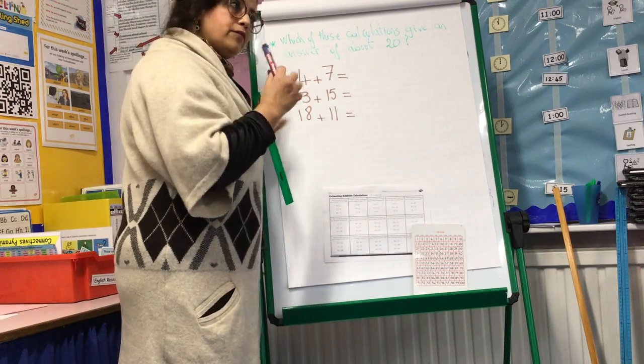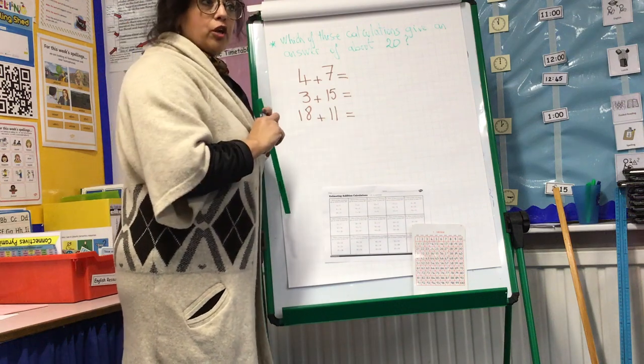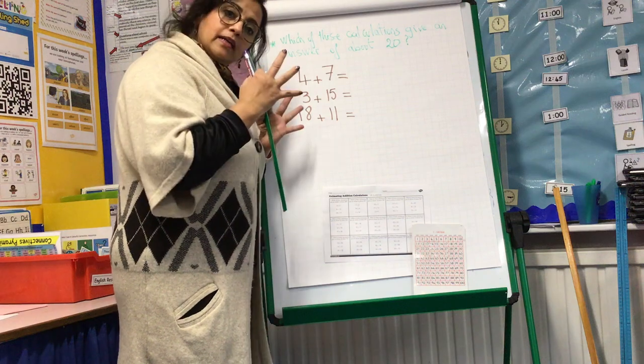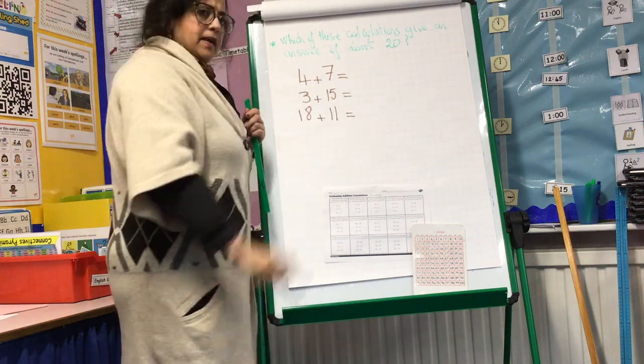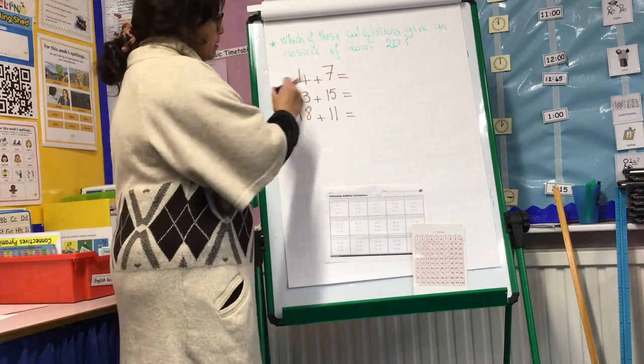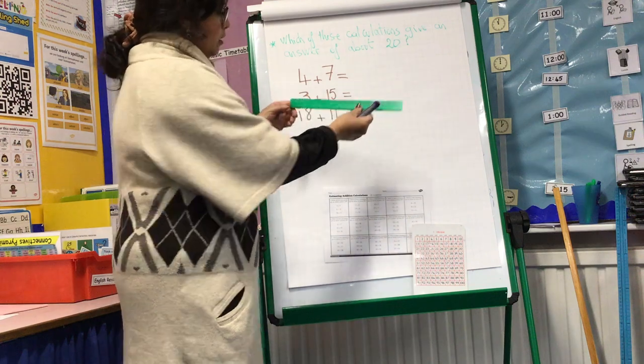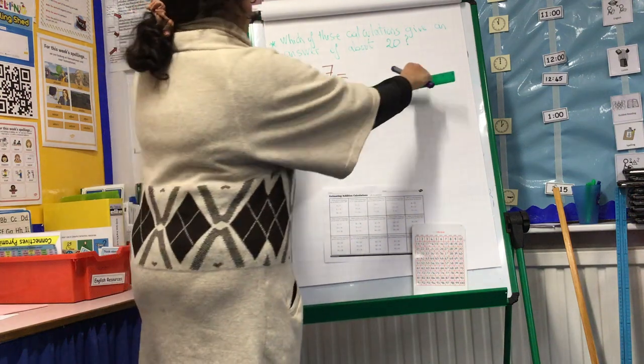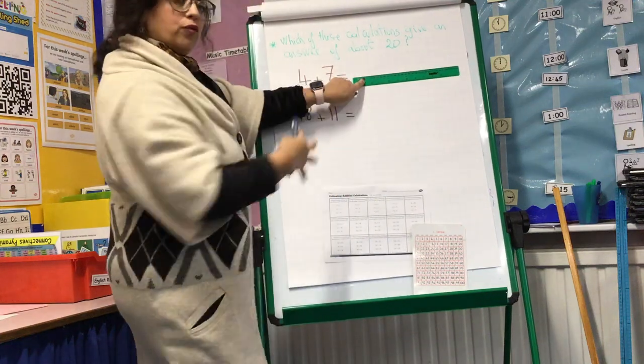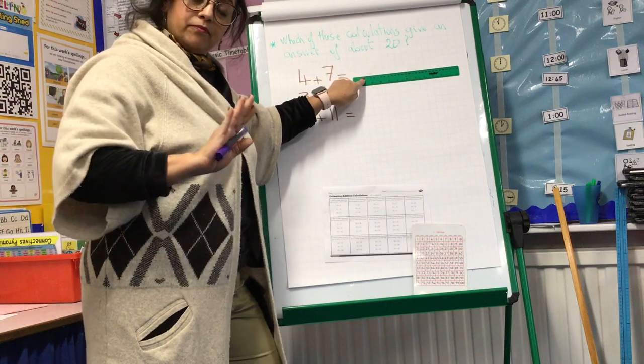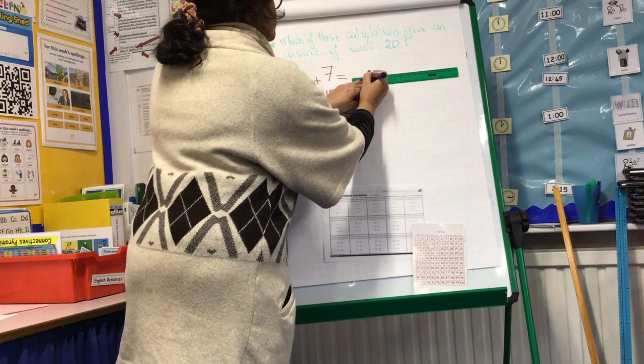For example, I'm going to model this one for you. So we have 4 plus 7. Does 4 plus 7 give you an answer that is about 20? So if you use a ruler you put the ruler like this and you just go, this is 4.